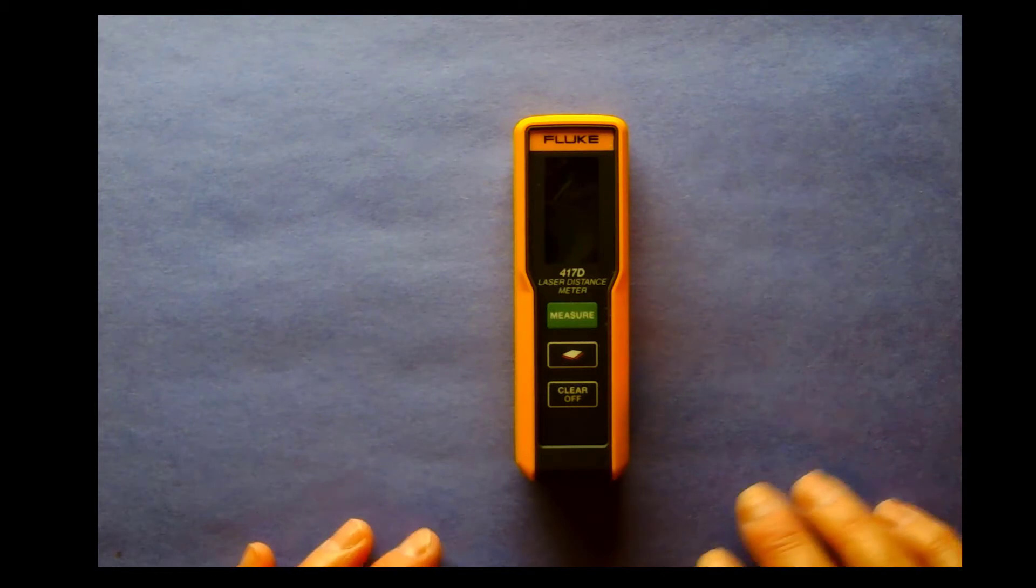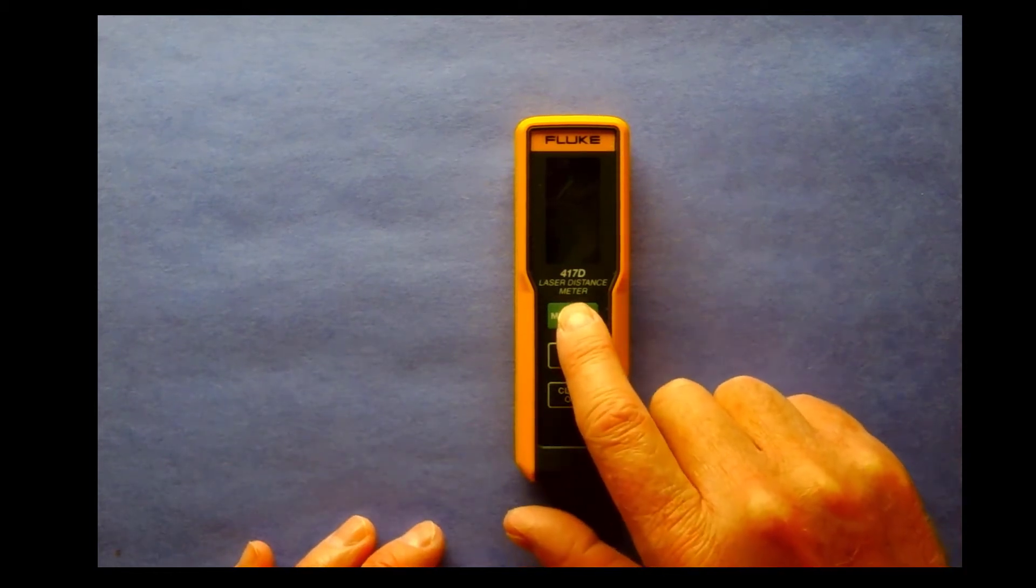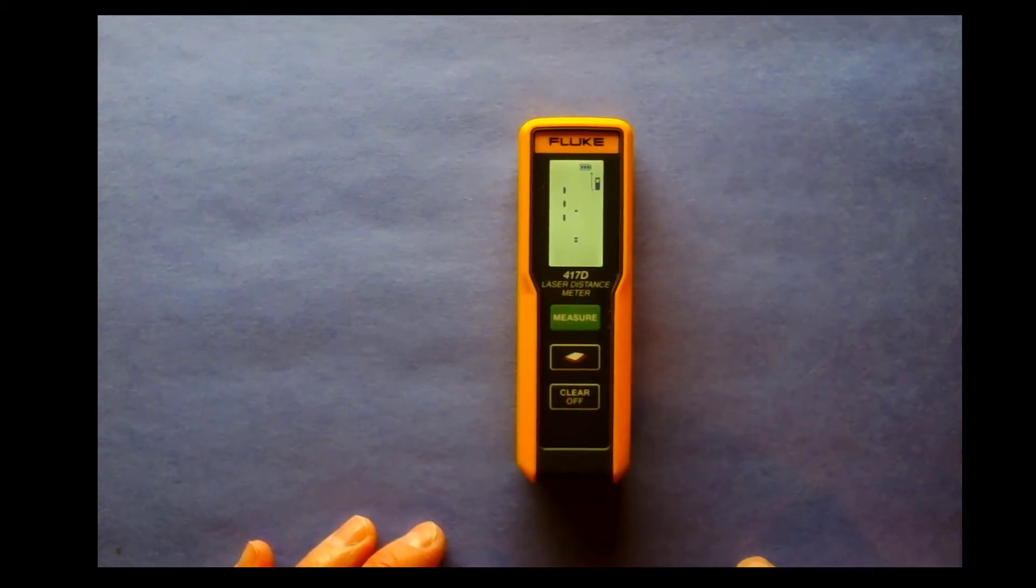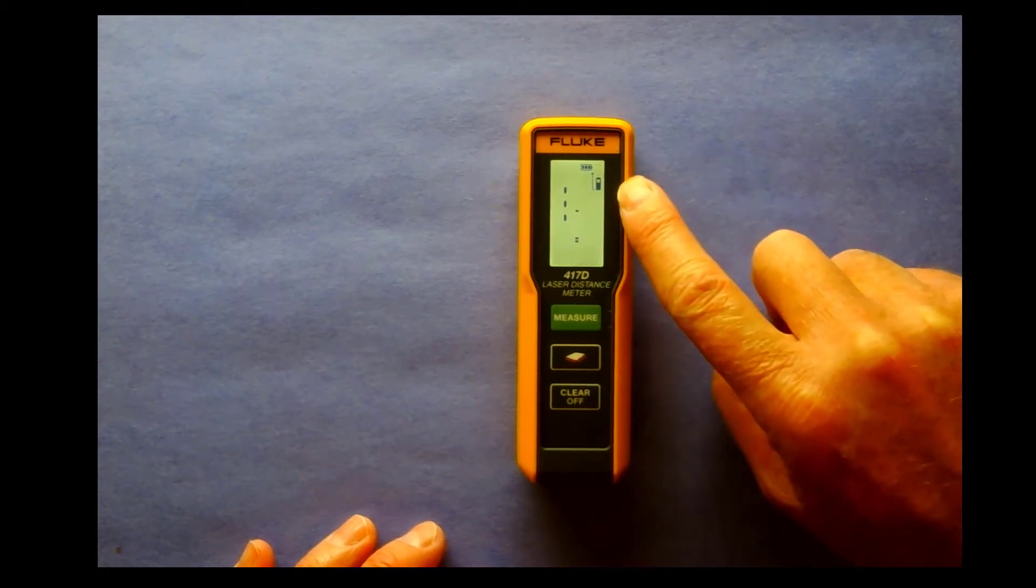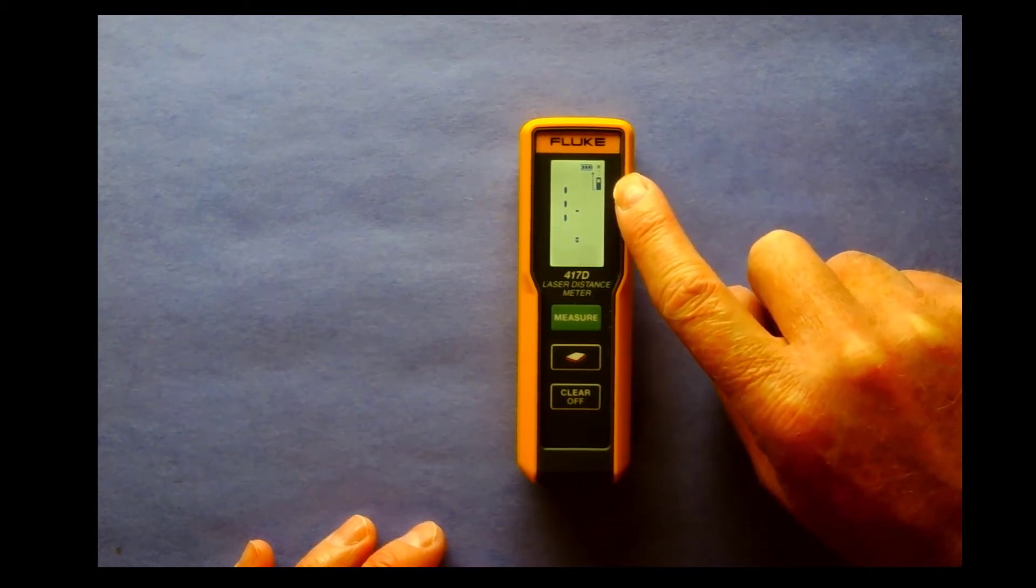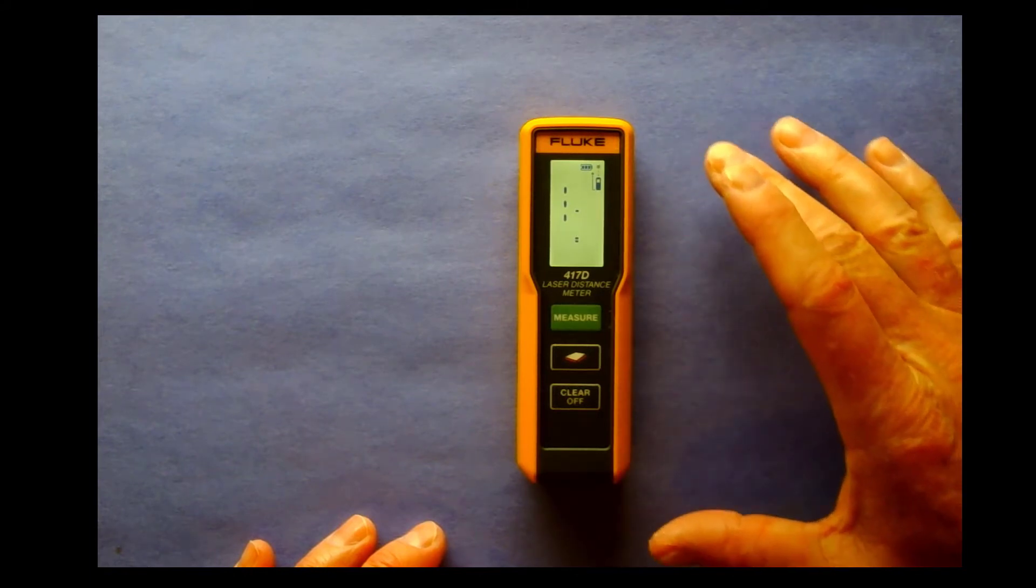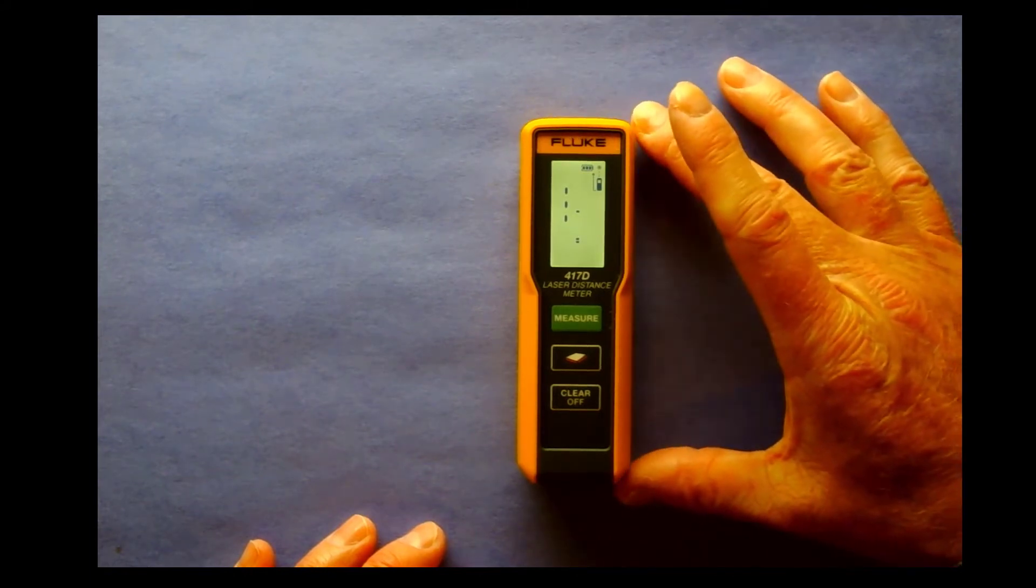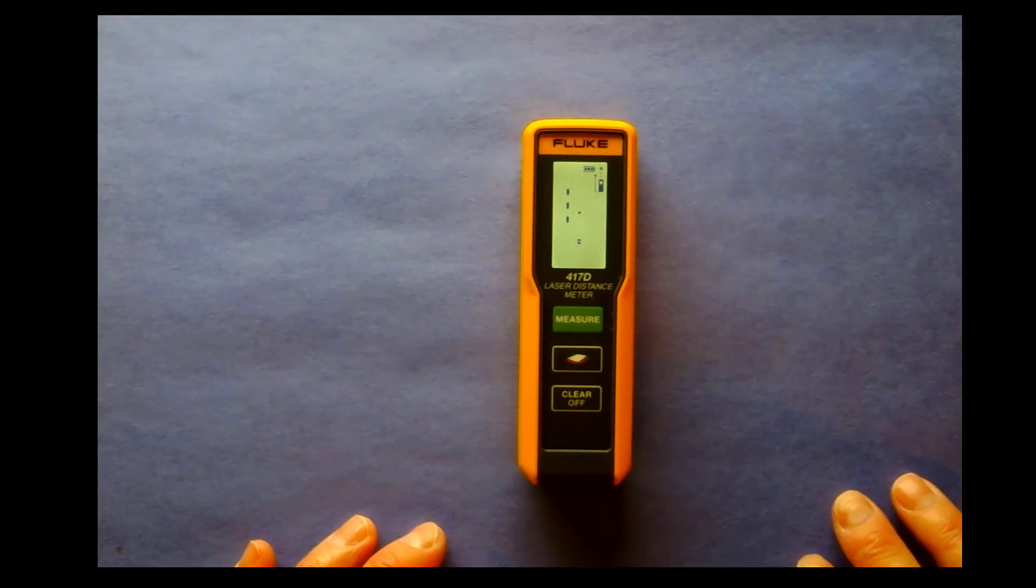It's a small simple unit to use. Hit the green measure button to turn the unit on. The unit starts with the laser. It also tells you that it is measuring from the back of the tool so that when you do butt this up against a wall, it takes the measurement of the entire unit into the calculation.